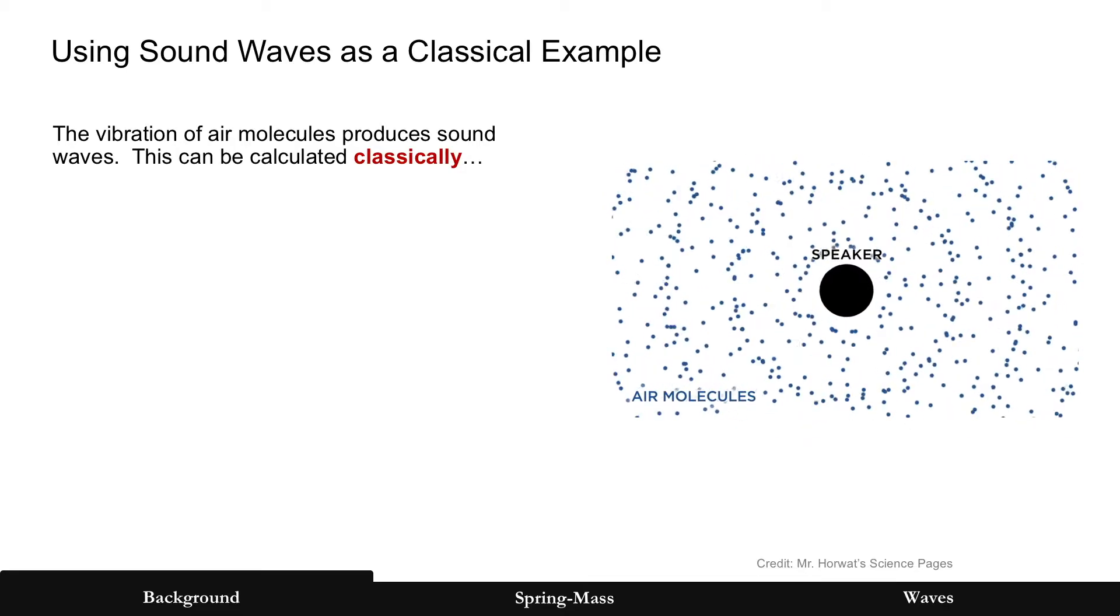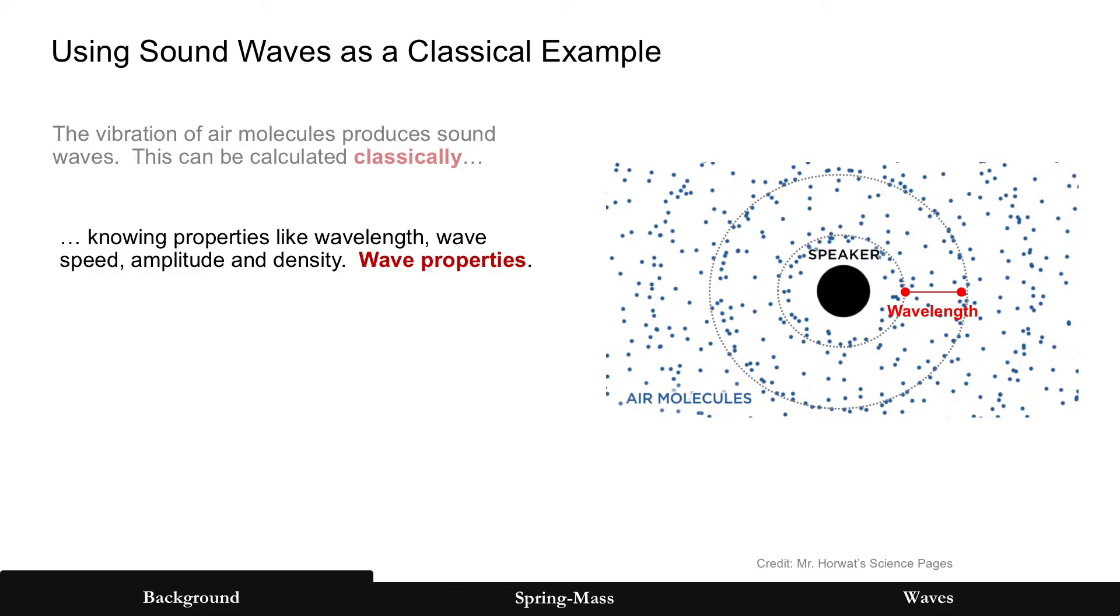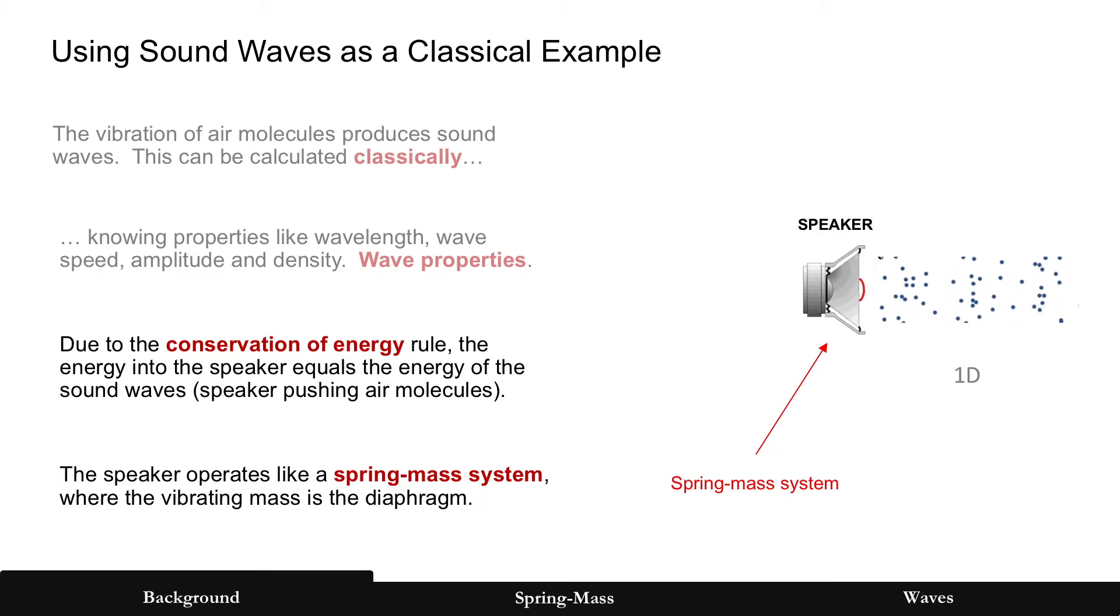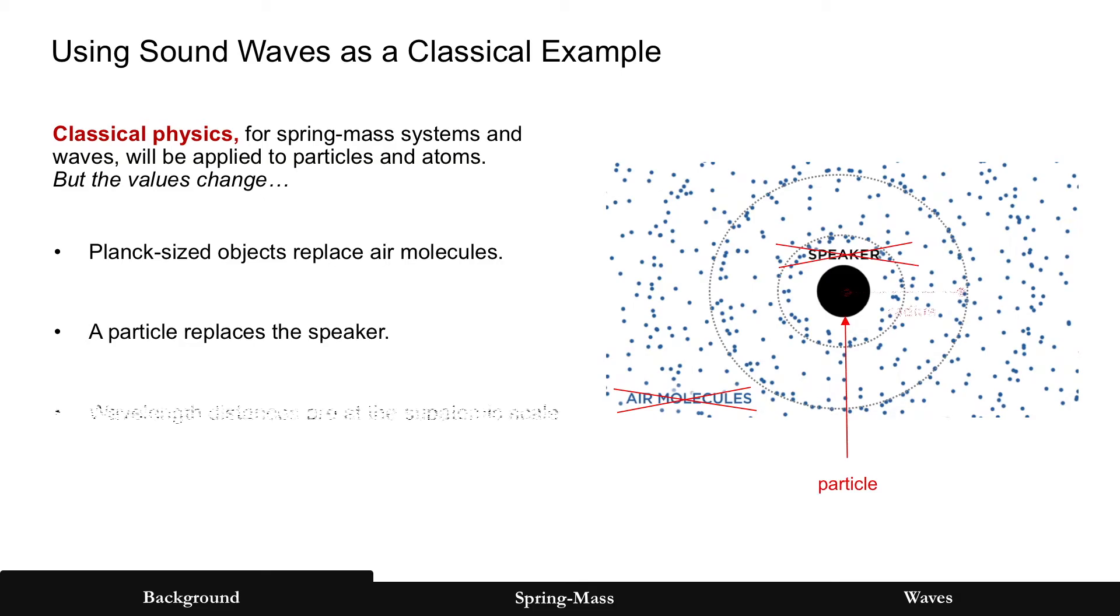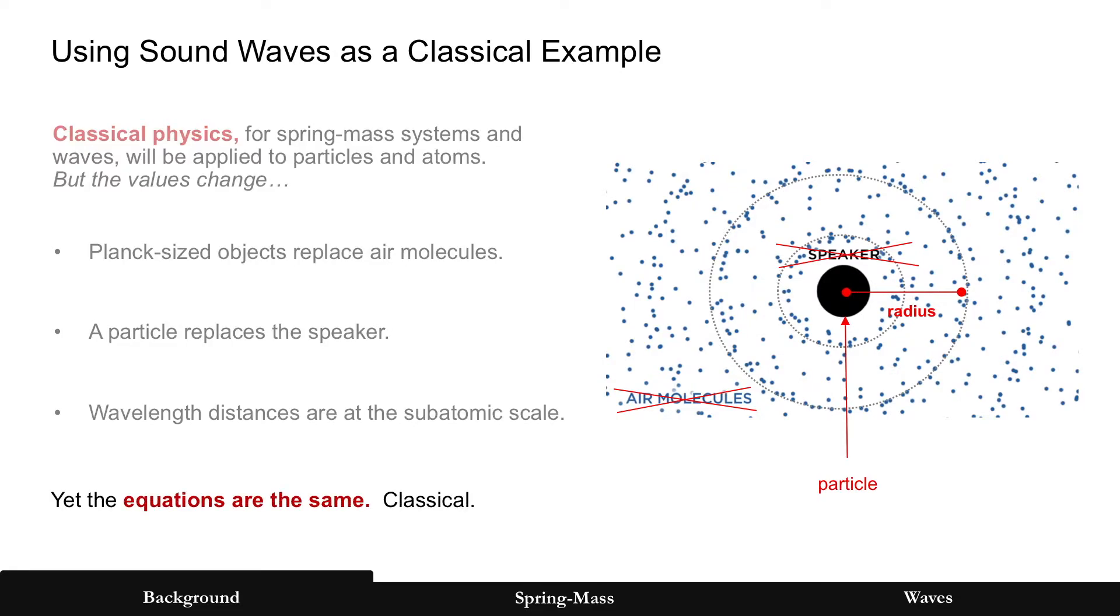And we're going to use sound waves as the classical example. Sound waves, vibration of air molecules, which can be calculated classically, with wave properties such as wavelength, wave speed, amplitude, density. But due to the conservation of energy rule, such as the speaker that generates those sound waves, that speaker operates like a spring mass system. So we're going to show that these different types of equations can be used, spring mass system and waves. But the values are going to change. Even though we're going to use classical physics, the values we'll be using are going to be much, much smaller. For example, replacing air molecules with Planck-sized objects, which are orders of magnitude smaller. A particle will replace the speaker. Wavelength distances are going to be at the subatomic scale. But the point is, those are just values. Same equations, just the values are going to change.